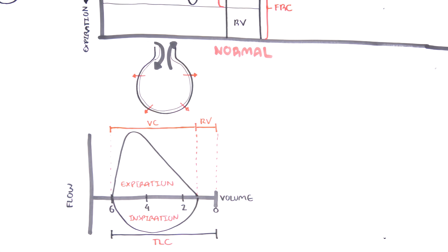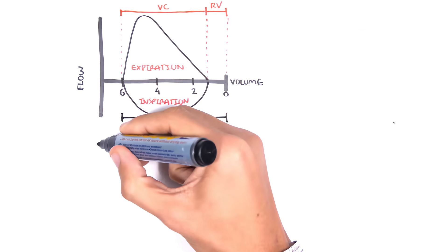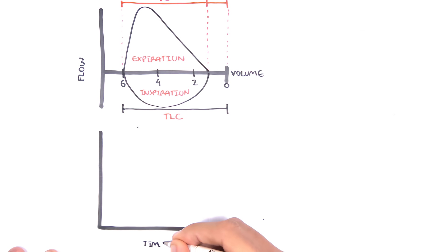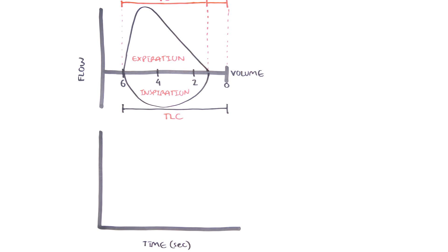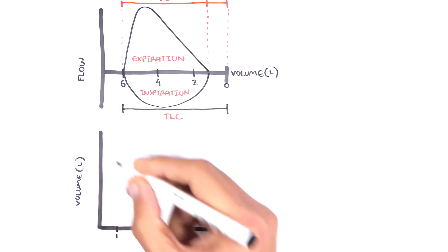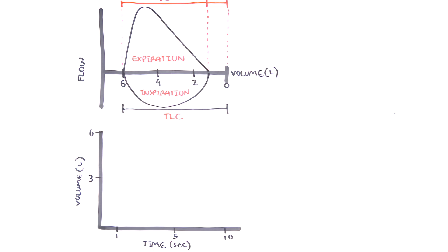We can look at forced vital capacity on a different graph by also introducing time. Here we have time on the x-axis in seconds, 1 through 10, and on the y-axis is the volume of air in the lungs in liters — 3 liters and 6 liters, where 6 liters is the total lung capacity in an adult male.